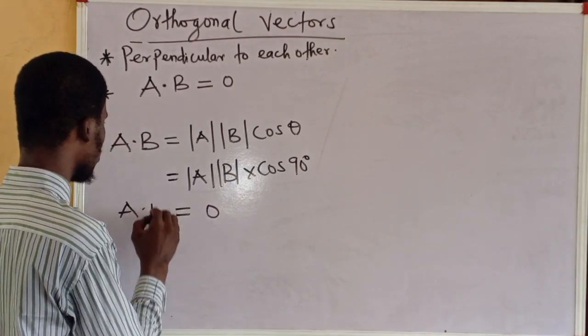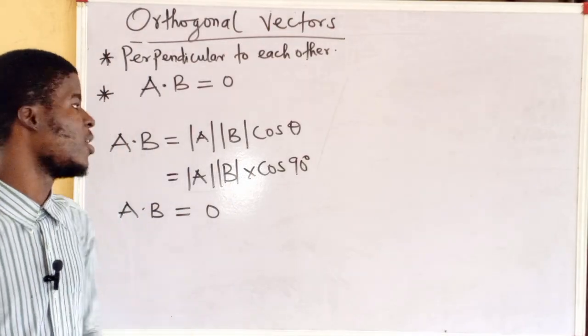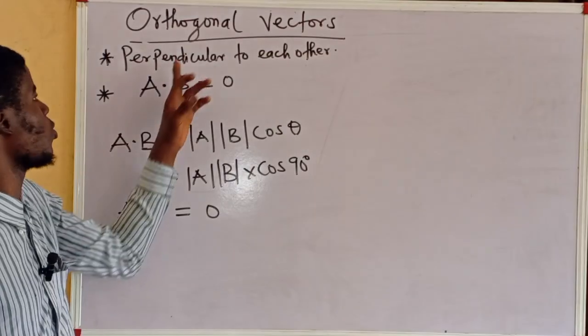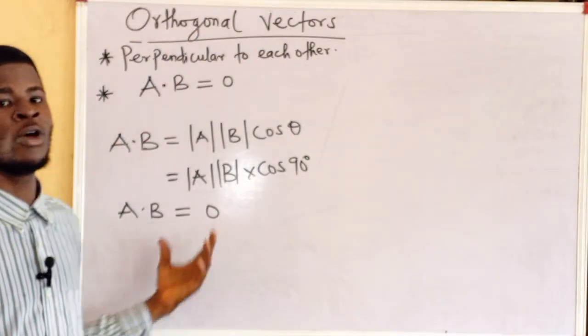That's for the dot product. So, you can see what we are saying. For two vectors that are orthogonal or perpendicular to each other, their dot product is zero.